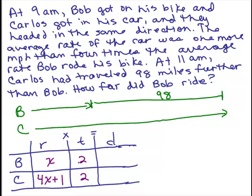So to get the distance for each, we multiply each rate times time. For Bob, X times 2 would be 2X. And for Carlos, we'd have 4X plus 1 times 2. We could simplify Carlos' distance by doing the distributive property: 2 times 4X is 8X plus 2 times 1 is 2.